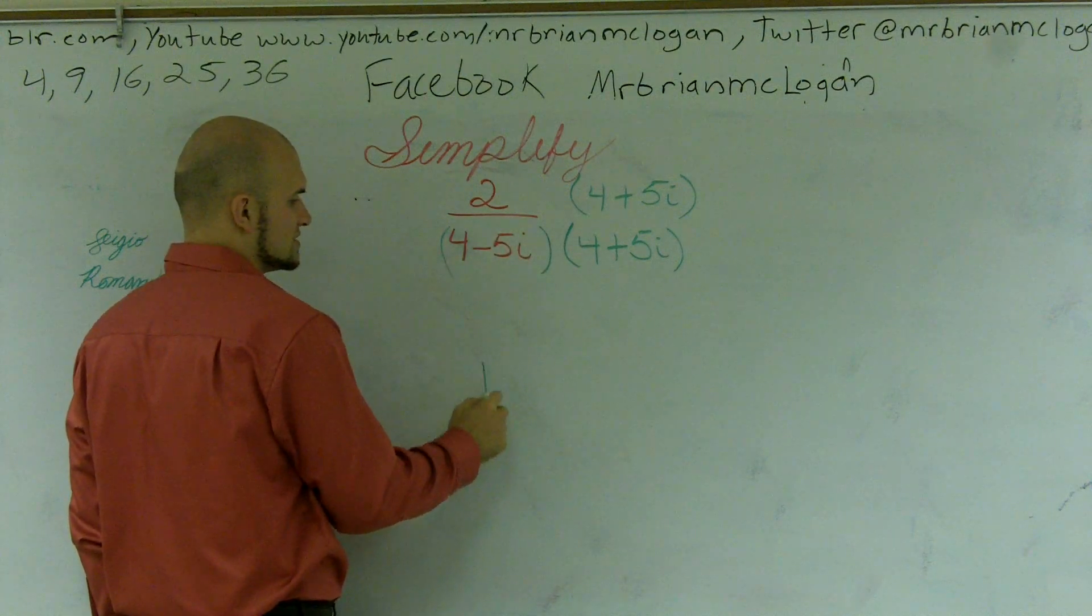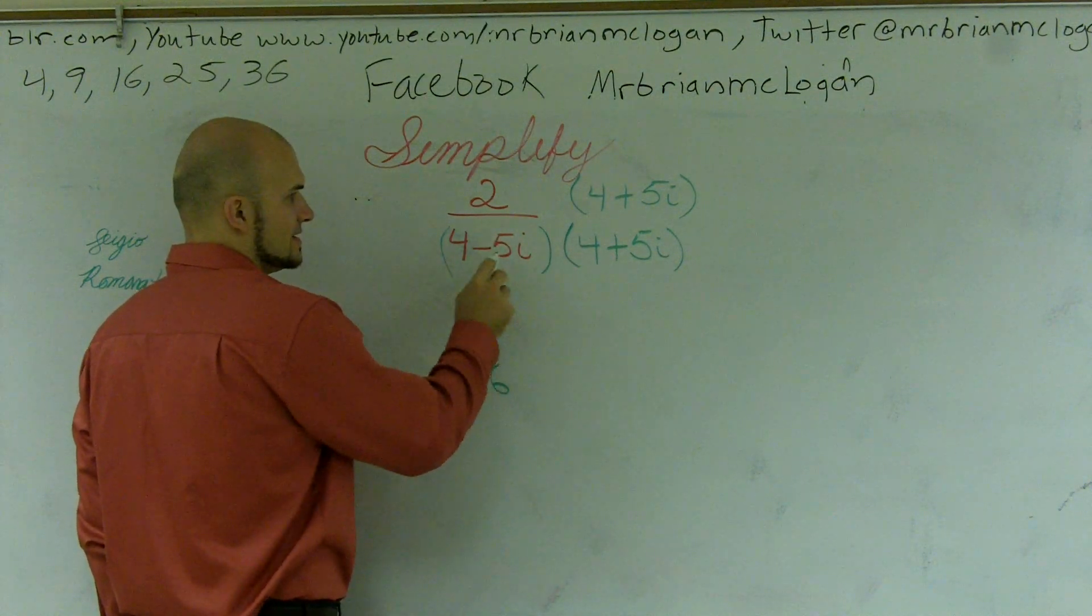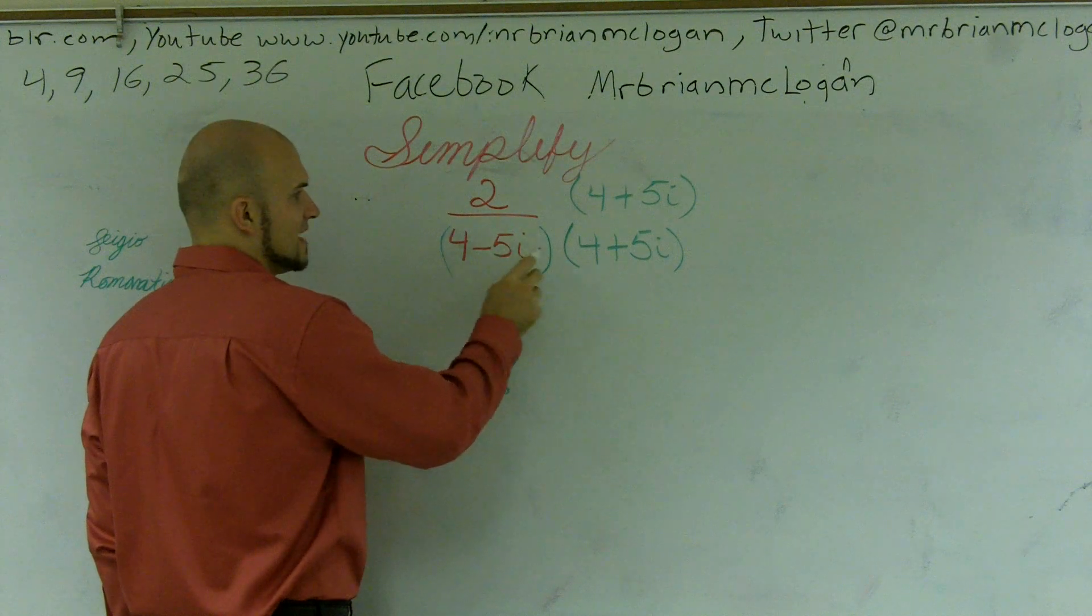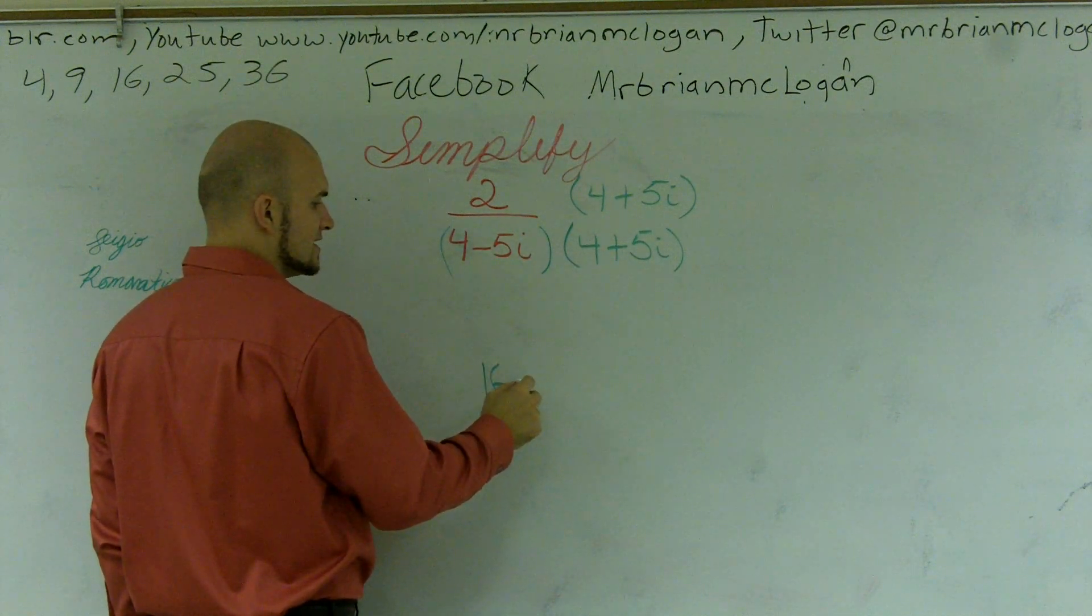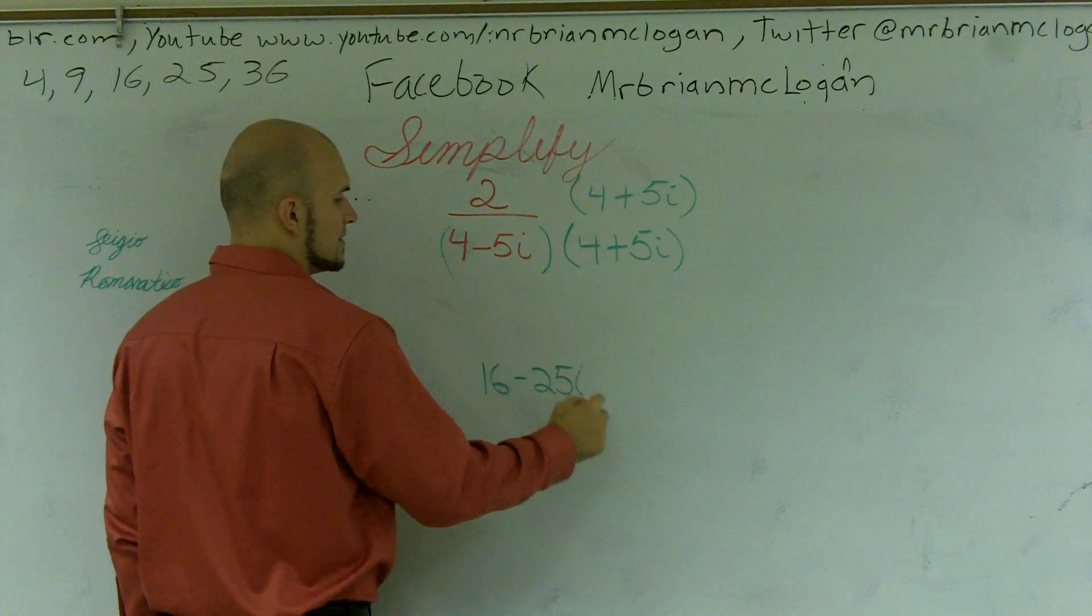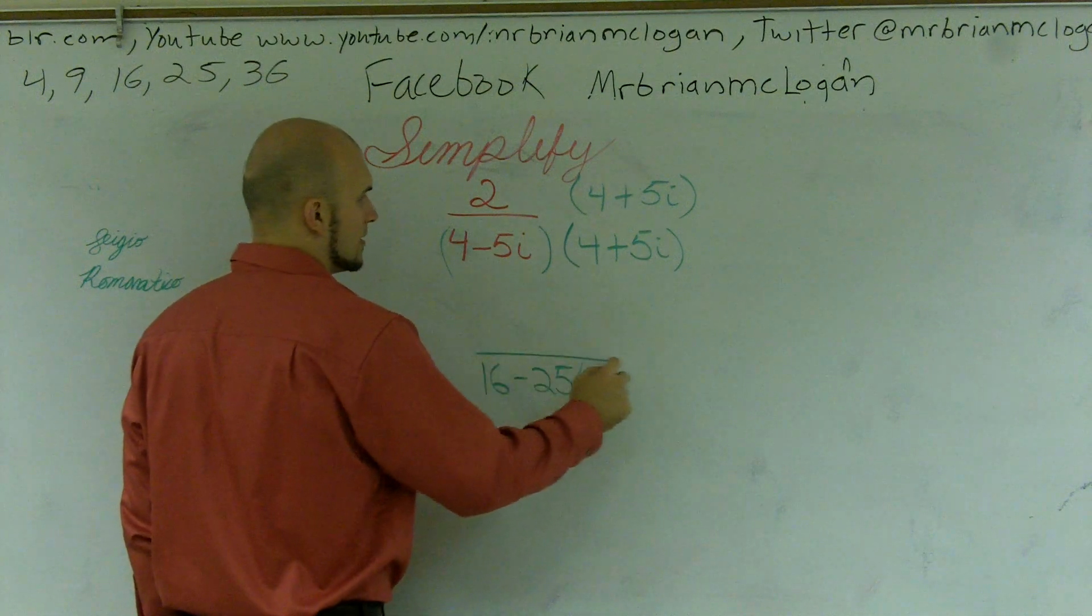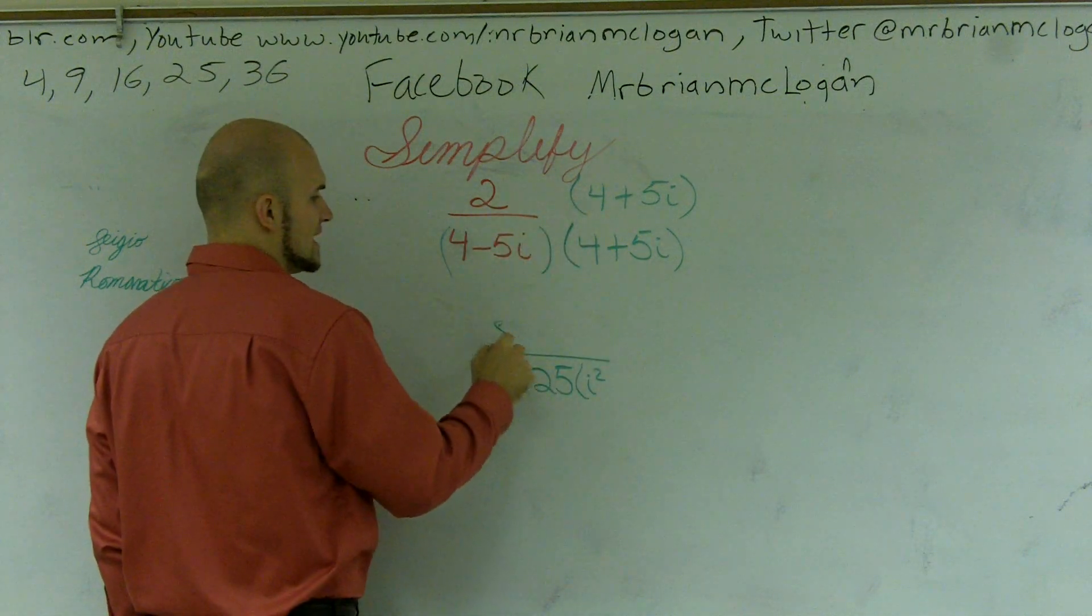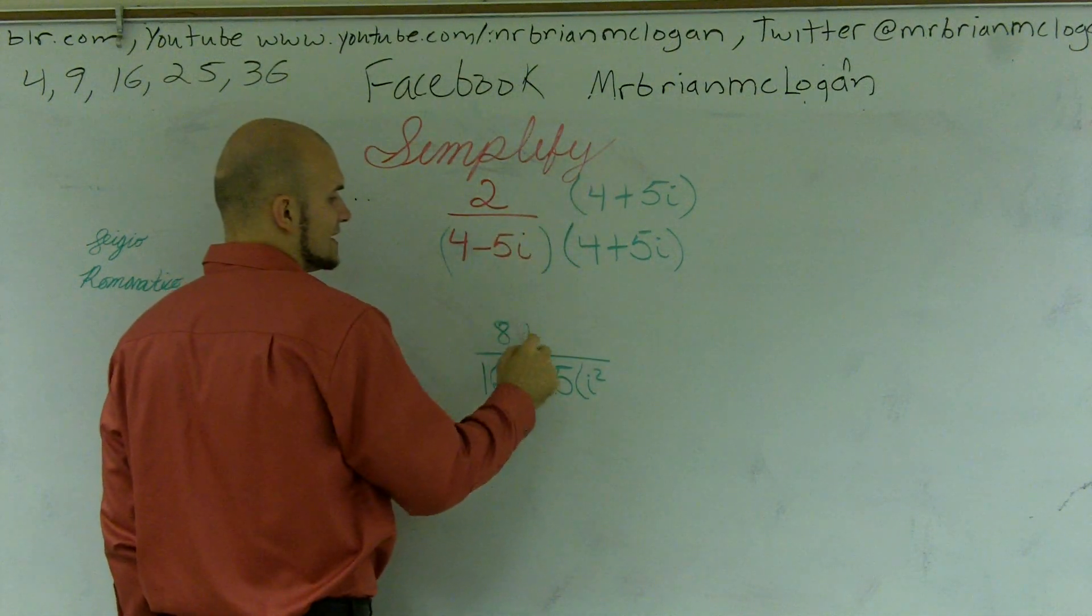So on the bottom, I'll get 4 times 4, which is 16, and then negative 5i times 5i is negative 25i squared, all over 2 times 4, which is 8. 2 times 5i is 10i.